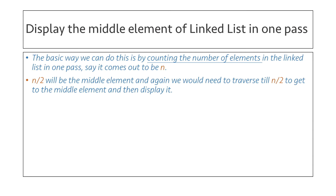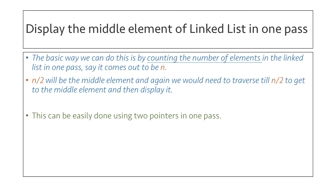But this will take two passes — one to count the number of elements, and the second pass to get to the middle element. Now how can we do it in a single pass? We can do it easily by using two pointers.